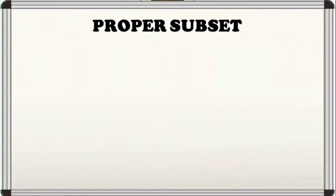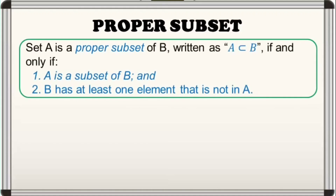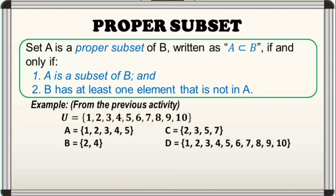Kailan ba magiging proper subset ang isang subset? Set A is a proper subset of B — written as A proper subset of B — if and only if: number one, A is a subset of B, and number two, B has at least one element that is not in A. From our previous activity, A is a proper subset of set U dahil una si set A ay subset ni set U, at pangalawa, merong element si set U na wala si set A.